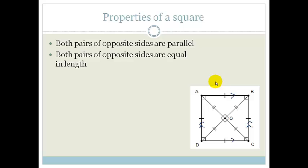Both pairs of opposite sides are equal in length. One, two, three, four. So these are equal and these are equal. Both pairs of opposite angles are equal.